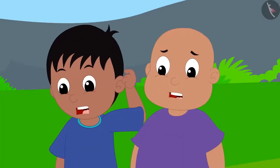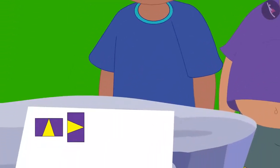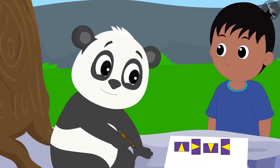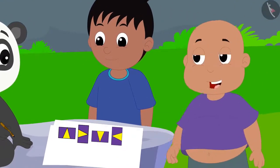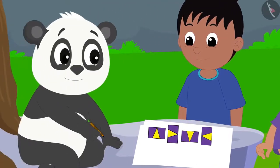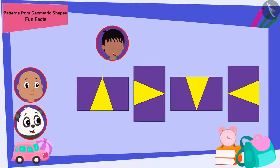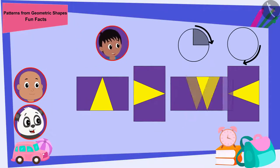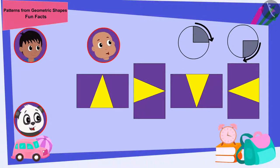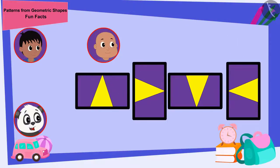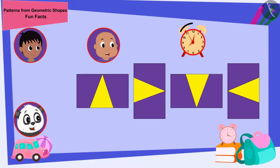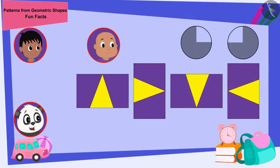Raju and Bablu started thinking. Look Golu, I completed your pattern, Raju said to Golu. I too have finished your pattern Golu, Bablu said to Golu. Okay, Raju, first you tell me how did you make this pattern, Golu asked. I made this pattern by rotating the block a quarter of a time in the clockwise direction, Raju told Golu. You have made it in the wrong way. I made this pattern by rotating the block three quarters in the counter-clockwise direction each time, Bablu told Raju.